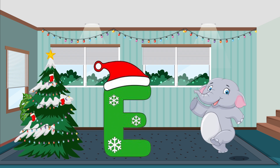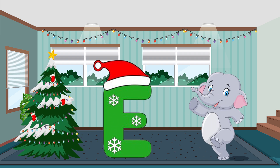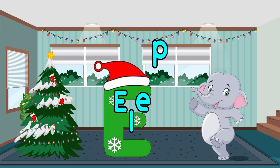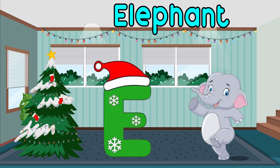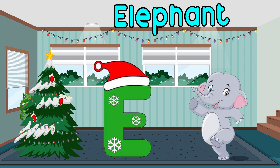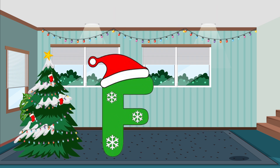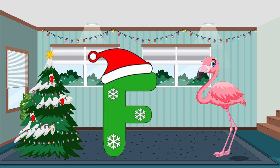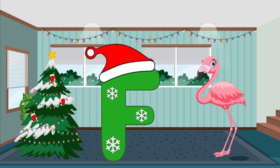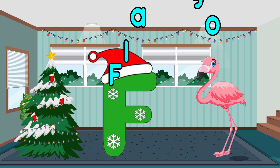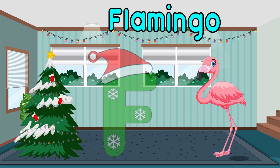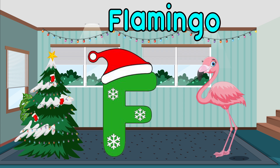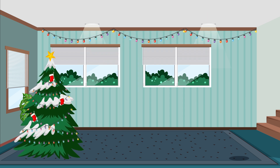E is for elephant. E-e, elephant. E-e, elephant. E, elephant. F is for flamingo. F, flamingo. F, flamingo. F, flamingo.